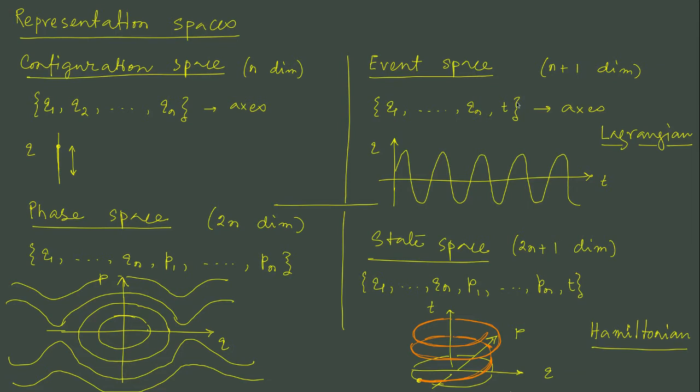We can extend configuration space to event space by adding time as yet another dimension. The harmonic oscillator is then represented by a sinusoid, and the system at any given time is on this sinusoid and moves along the sinusoid as a function of time.